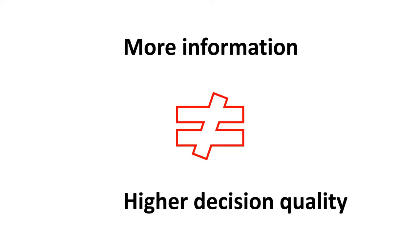In this video, we'll talk about information bias. First, what is information bias? It is people's tendency to seek information even when it does not influence their decision.